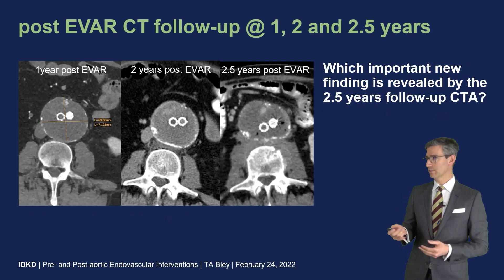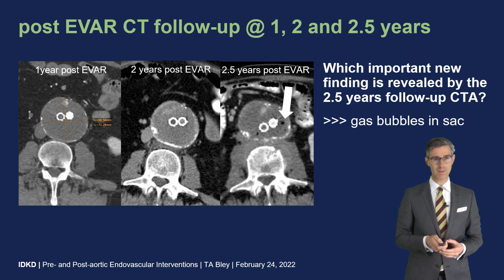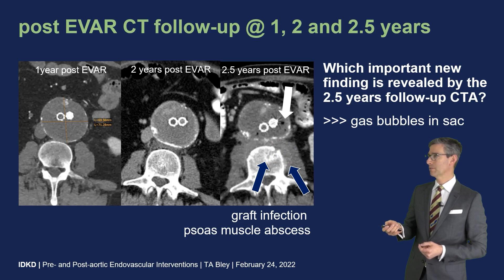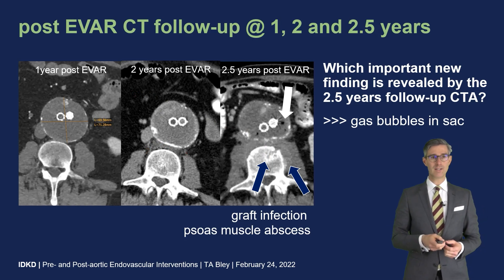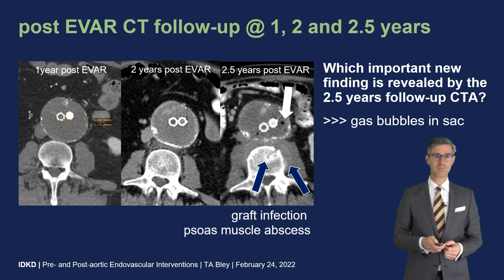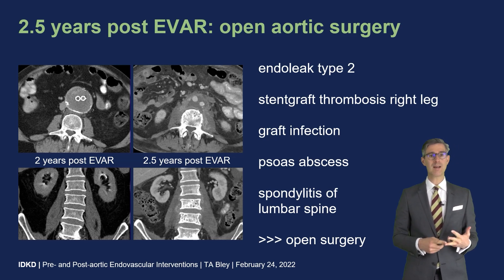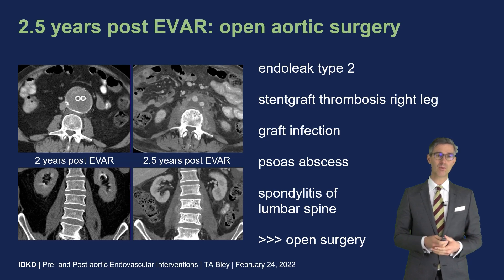Follow-up at two and two-and-a-half years revealed one more finding: new gas bubbles within the aneurysm sac, which is truly concerning. Looking closely, there is also a psoas muscle abscess continuing all the way to the lumbar spine. Looking back at the two-year image, there is stranding on the posterior aspect of the aortic aneurysm — a potential early sign of infection. This patient had a type II endoleak, stent graft thrombosis of the right leg, graft infection with a psoas abscess, and spondylitis of the lumbar spine, and required open surgery with stent graft removal.